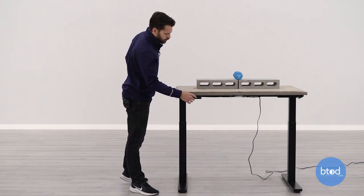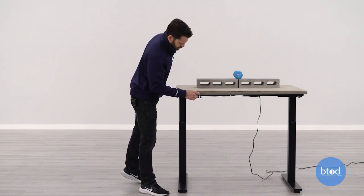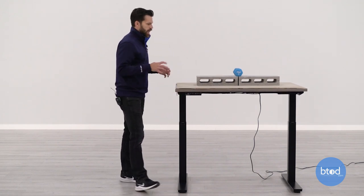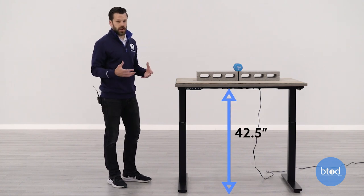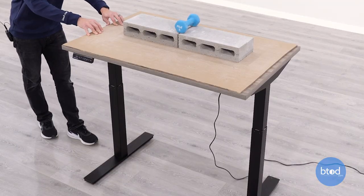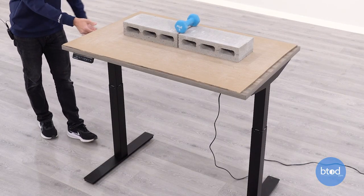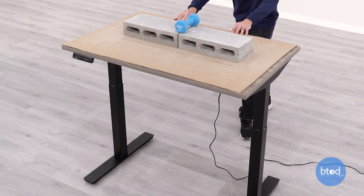We'll jump up to 42 and a half inches. Now 42 and a half inches is the average height for the male population in the United States, which is 5'9. This is where they would stand. So we'll do the same test here.